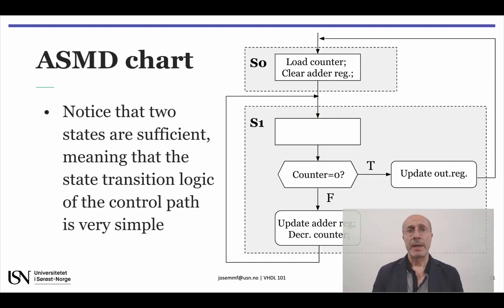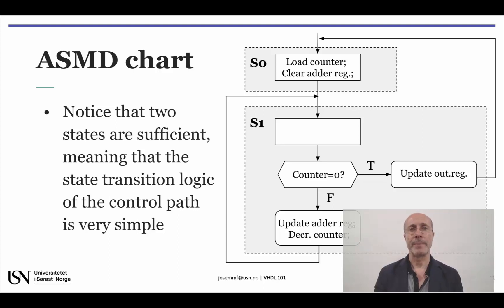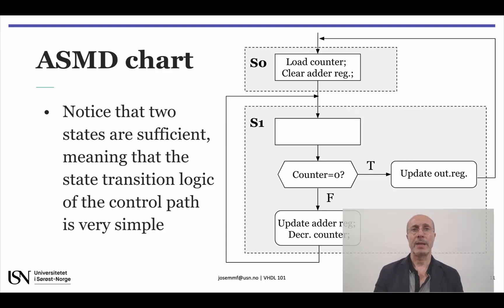The ASMD chart is fairly simple, as it frequently happens with FSMD architectures, since the control path is only responsible for the top-level operations. The initial state comprises two Moore statements, which take place unconditionally. The counter is loaded with one of the operands and the adder register is cleared to reset the partial sum.